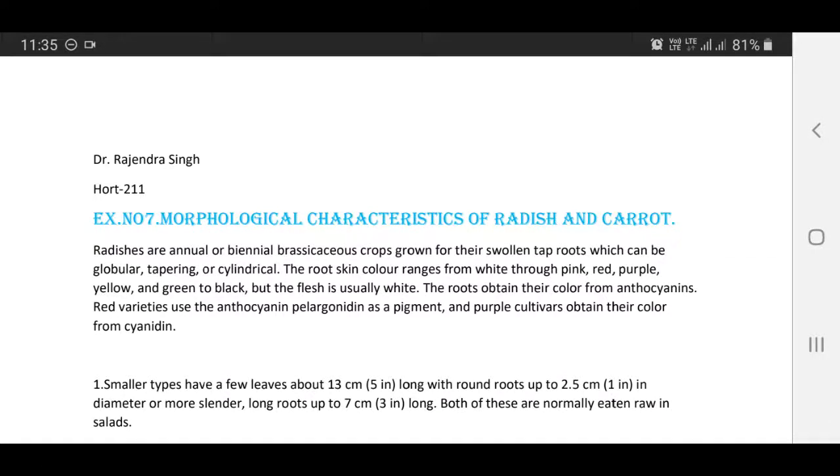Hello everyone, today's exercise is morphological characteristics of radish and carrot. Radishes are annual or biennial Brassicaceous crops grown for their swollen tap roots, which can be globular, tapering or cylindrical in shape. The root skin color ranges from white through pink, red, purple, yellow and green to black, but the flesh is usually white.